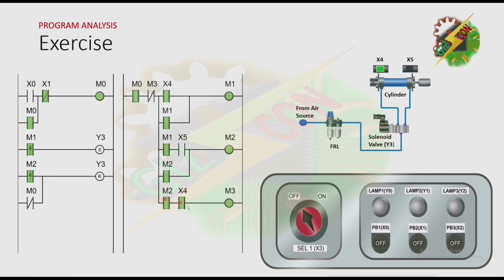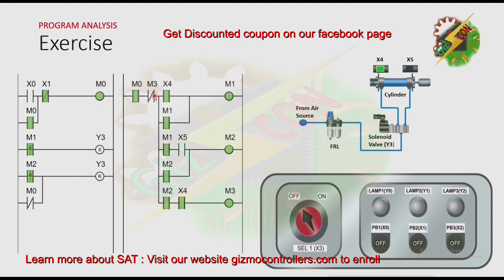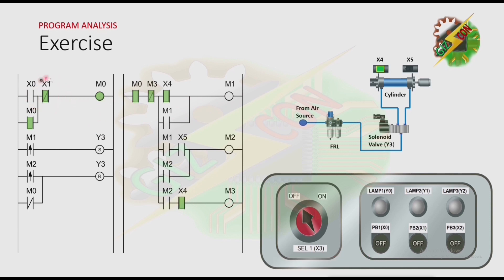Now that m2 is energized and the cylinder is at the fully retracted position, m3 will turn on. That will cause the normally closed contact of m3 to open, and all coils here will turn off. Then m1 will turn on again and the cycle will just repeat. The cycle will continue unless m0 is not energized anymore. To do that, we press PB2, and because x1 is open, m0 turns off and the cycle will not repeat.